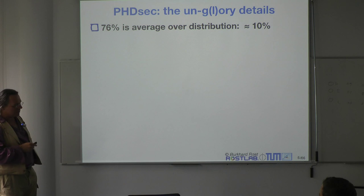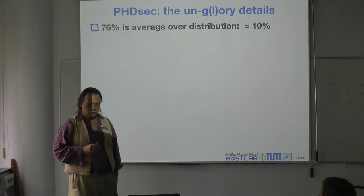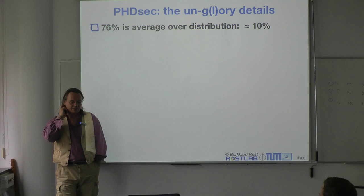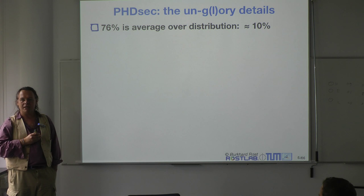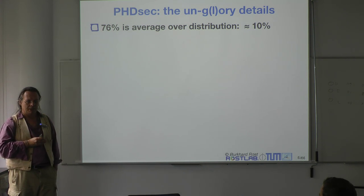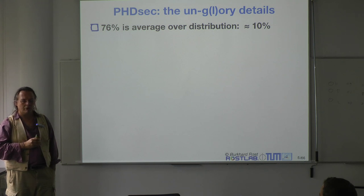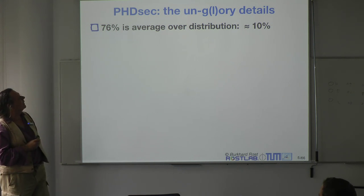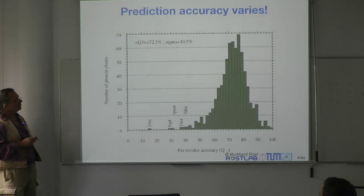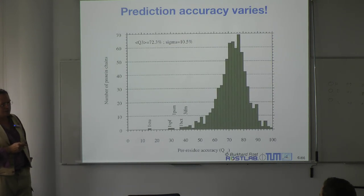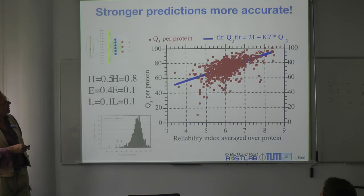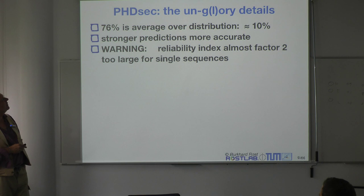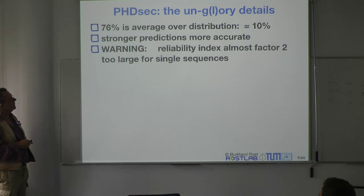I just gave you the number 72 for Q3, but on these slides I give you 76 — simply because these slides were done a little later, at which prediction accuracy had grown. Today, prediction accuracy is even higher than that. So this is a distribution, and the question is: stronger predictions are more accurate — and that allows me to see on which side of the distribution I sit.